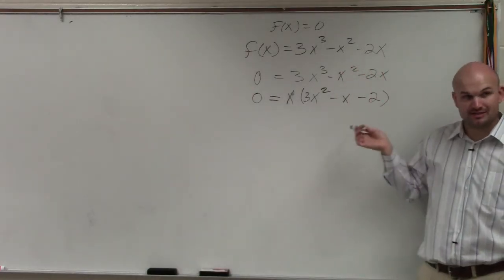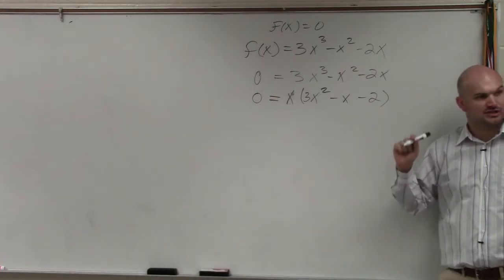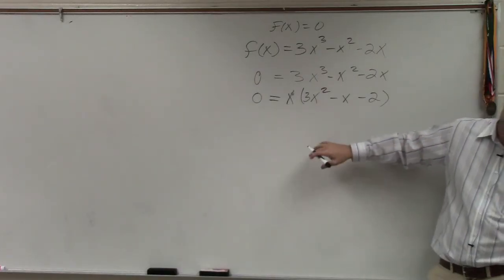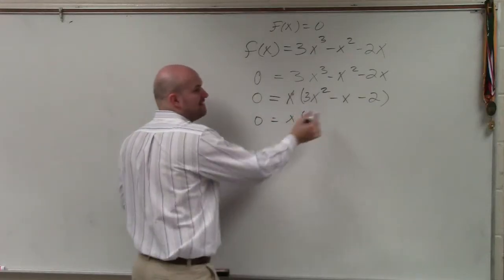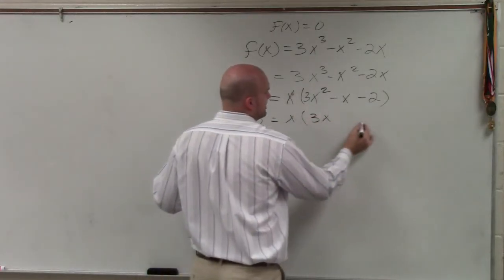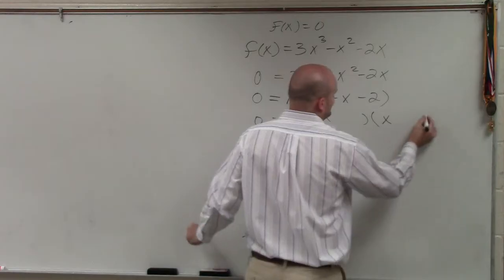Now I need to factor this. I could use the long method which I showed at the beginning of class, but I'm going to do this in my head. I'll talk my way through it for you. So I know if I'm going to multiply two factors to give me 3x squared, one is going to be 3x and the other is going to be x.